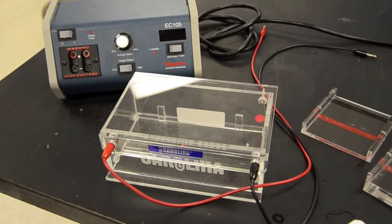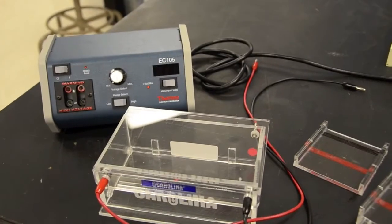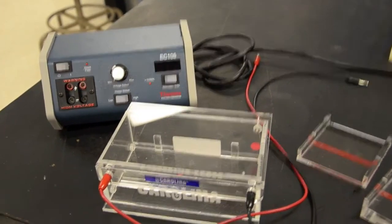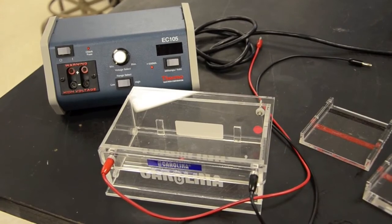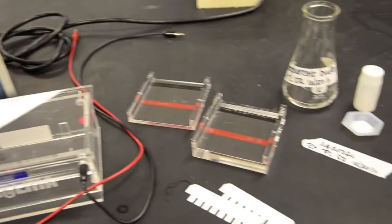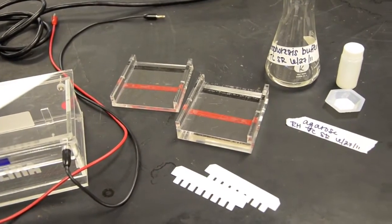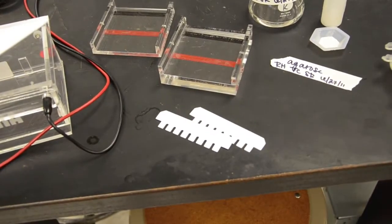Now I will list the items you'll be using today. This is the power supply followed by the electrophoresis chamber. Next we have two gel beds and below that the gel combs.